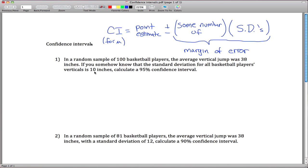In this first example here we have 100 basketball players and their average vertical, so the sample average was 38 inches. I somehow know that the standard deviation of all basketball players' verticals, so what I'm getting at there is I know the population standard deviation sigma is 10, and I'm asked to create a confidence interval. Since I want a 95% confidence interval, alpha is equal to 1 minus 0.95, which is 0.05.